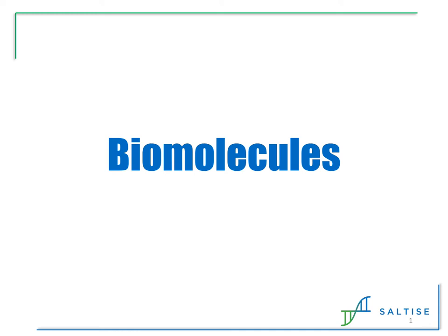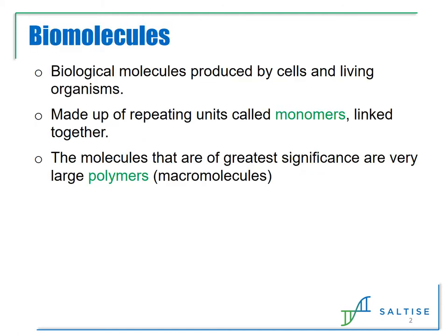In this module, we will look at the four main types of biomolecules. Biomolecules are very large molecules produced by cells and living organisms and are essential for life. They are typically made from linking together repeating building blocks, referred to as monomers. The resulting biomolecule ends up being a supermolecule and is described as being a polymer or macromolecule.